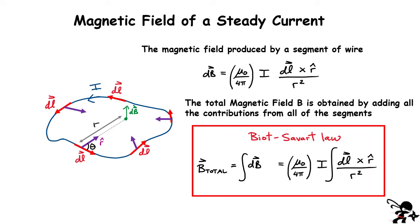Starting from the expression for dB — the element of magnetic field produced by a tiny segment — to find the total magnetic field from an entire loop, we simply add them all up by integrating. Taking the constants outside the integral gives the formal expression for the Biot-Savart law as a line integral. We'll start with easy cases to build familiarity.